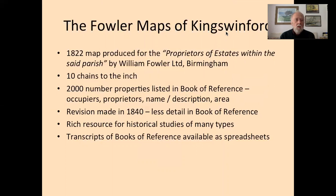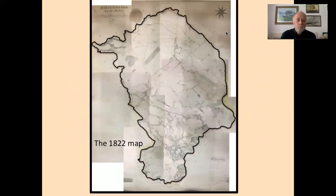The 1822 Fowler map was produced for the proprietors of estates within the said parish by the firm of William Fowler Limited in Birmingham at 10 chains to the inch. There were 2,000 numbered properties listed in the book of reference, giving the occupiers, the proprietors, a name or description, and the area. A revision was made in 1840 with somewhat less detail, and together they make a rich resource for historical studies. Transcripts of the book of reference are available as spreadsheets.